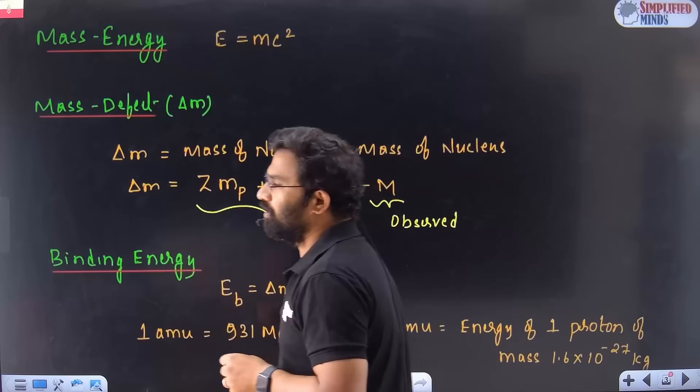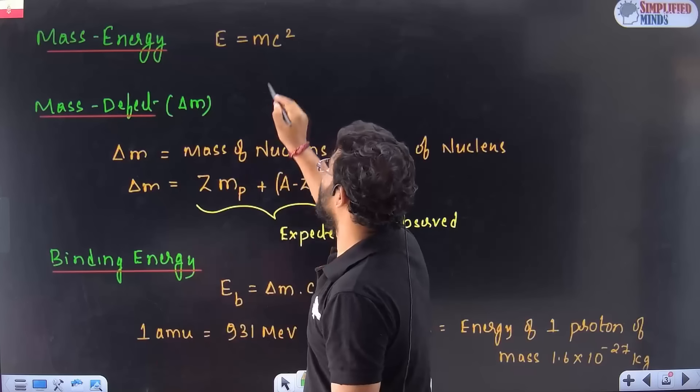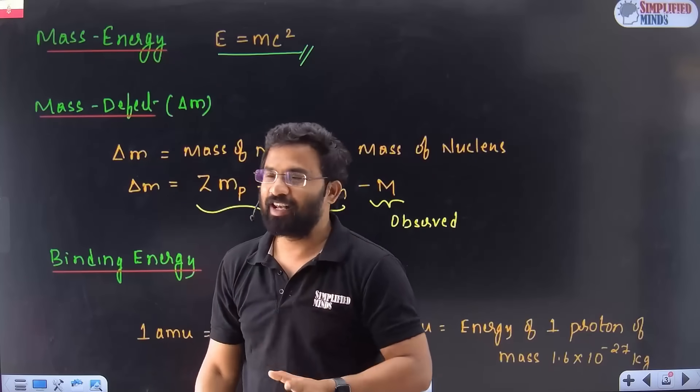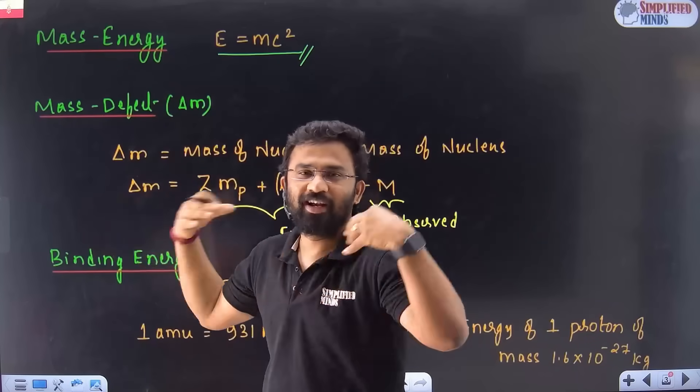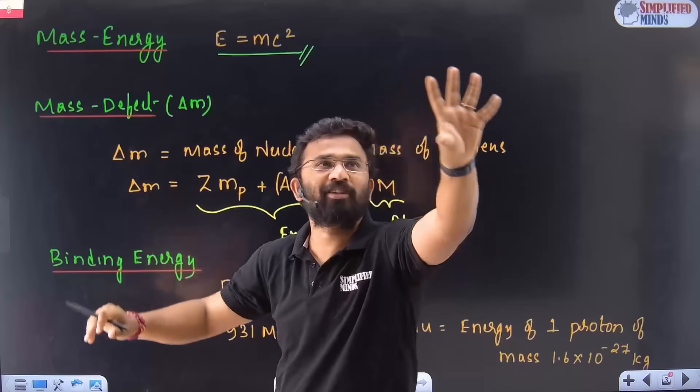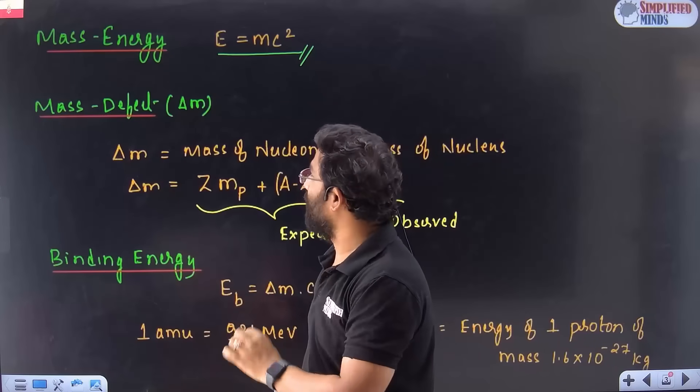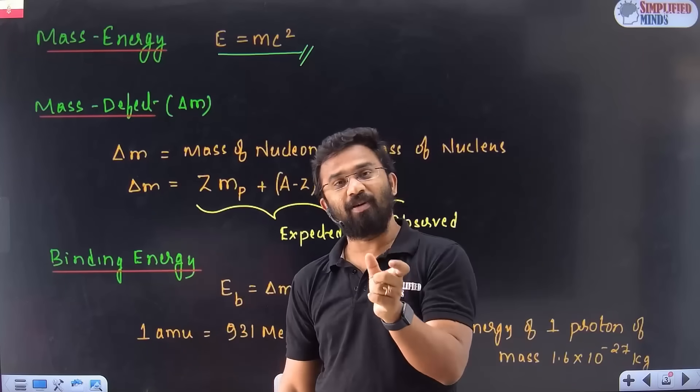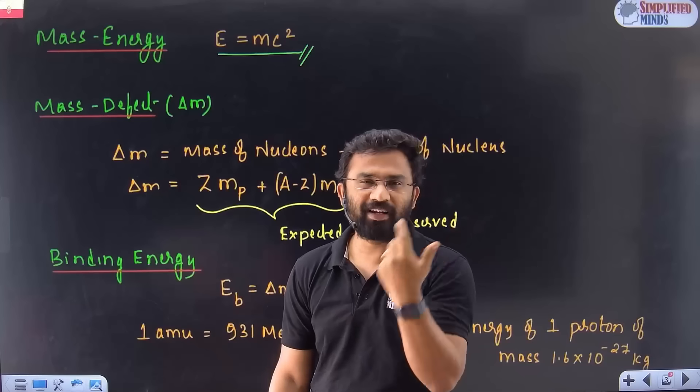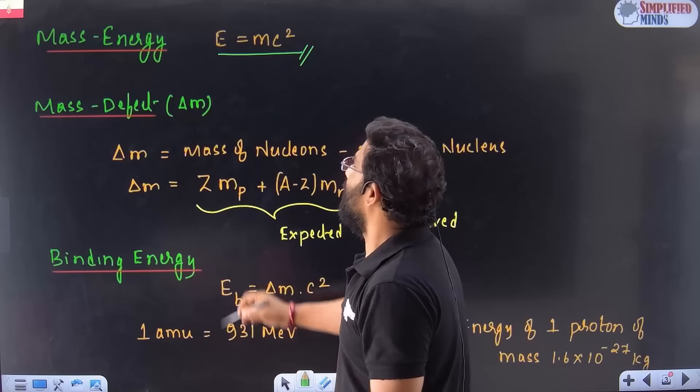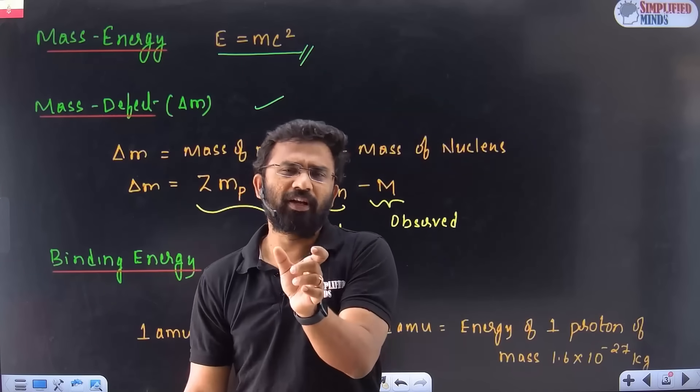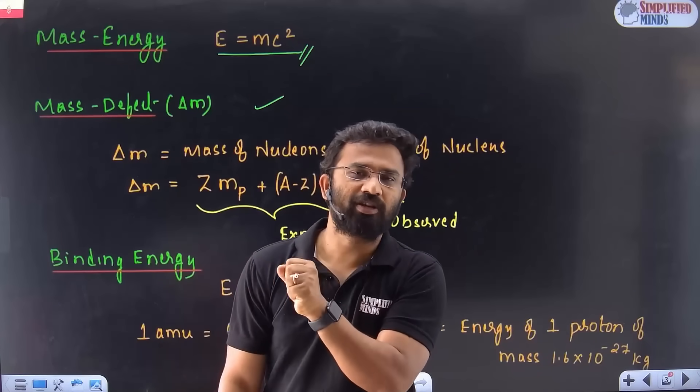And next is mass energy. So you know the famous equation E is equal to mc square. What is this equation? If you don't know physics, E is equal to mc square T-shirt. So this is a very famous equation which relates energy and mass. E is equal to mc square. It is given by Einstein, famous scientist. And the mass defect basically, very simple mc square.